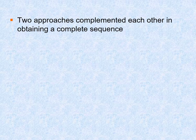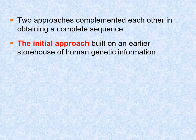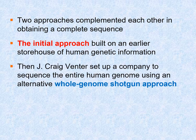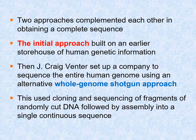There have been two approaches that complemented each other in obtaining a complete DNA sequence. The initial approach built on earlier storehouses of genetic information — small fragments submitted to databases, but not assembled into a complete genome. Then Craig Venter set up a company and sequenced his entire genome using the whole genome shotgun approach, which built on the idea of many stored DNA fragments. His process used cloning and sequencing of randomly cut DNA fragments, allowing assembly into a contiguous sequence.